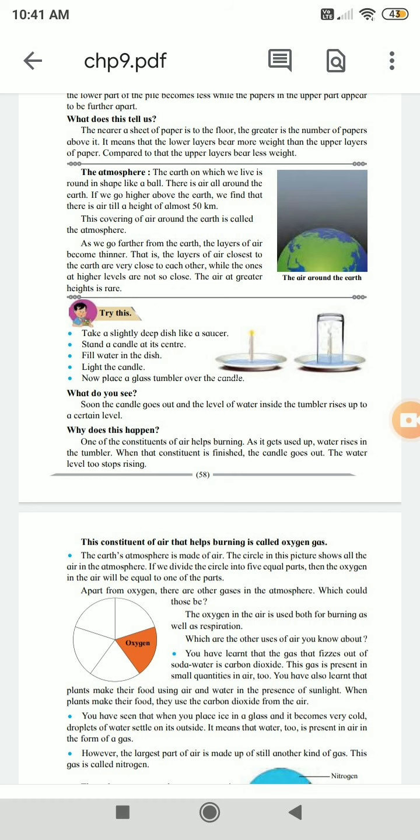Which could those be? The oxygen in the air is used both for burning as well as respiration. Which are the uses of air you know about? You have learnt that the gas that fizzes out of soda water is carbon dioxide. This gas is present in small quantities in air too. You have also learnt that the plants make their food using air and water in the presence of sunlight. When plants make their food, they use the carbon dioxide from the air.